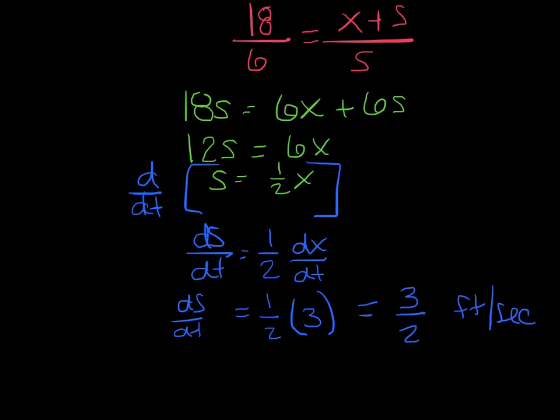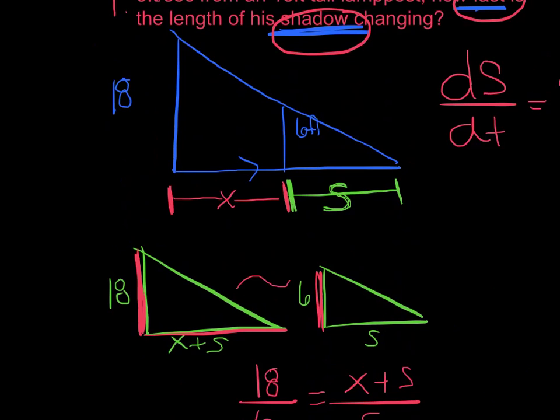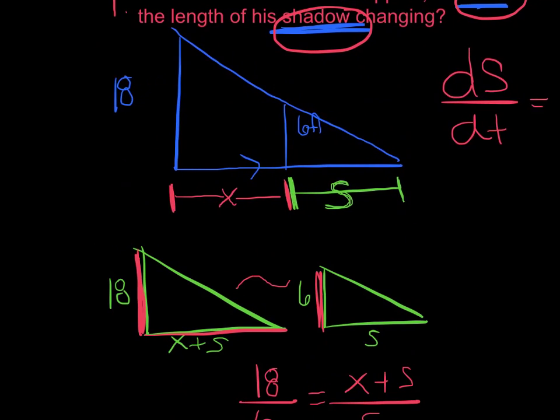So I basically have 1/2 times 3 for a total of 3/2 feet per second. Now, you'll notice it doesn't matter how far away you are. It doesn't matter if you're 2 feet, 3 feet, 4 feet. You're still walking at the same rate as you go across there. Alright, let's try another one.